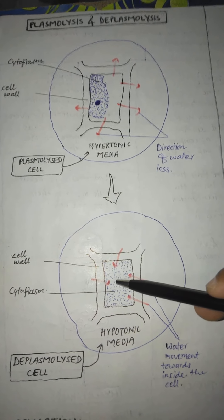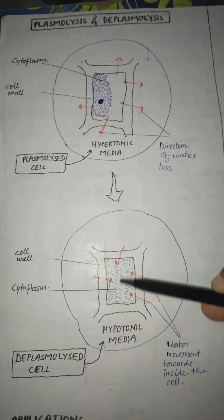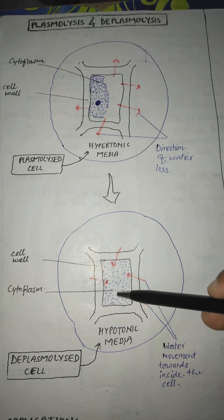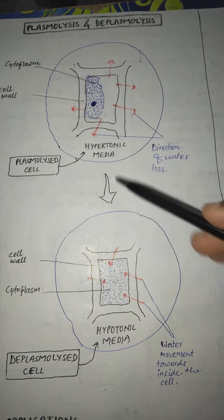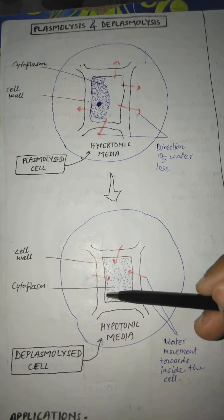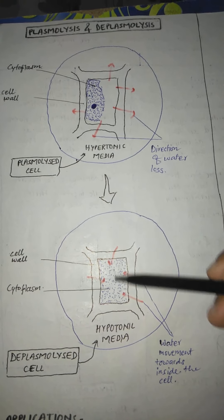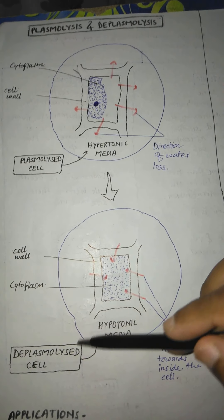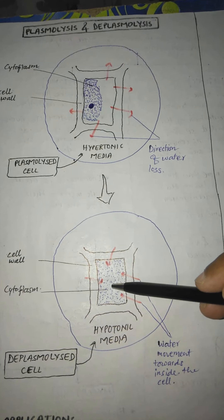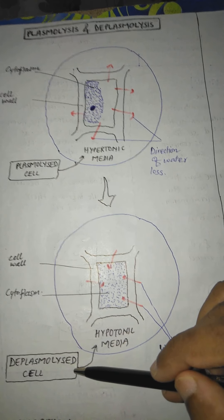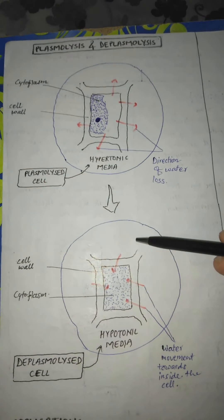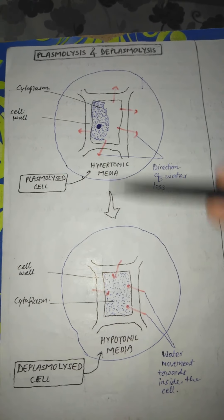The volume of the cytoplasm increases due to the movement of water molecules into the cells. The cytoplasm that had already shrunken during plasmolysis then expands during this process, which is known as deplasmolysis, and these kinds of cells are considered deplasmolyzed cells.